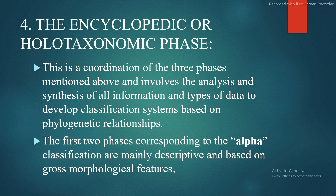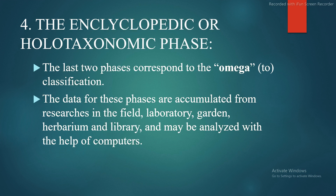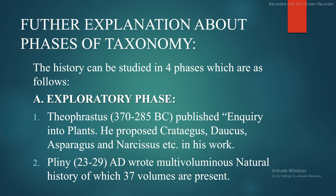Fourth is the encyclopedic or holotaxonomic phase. This is the coordination of the three previous phases and involves the analysis and synthesis of all information and types of data to develop classification systems based on phylogenetic relationships. The first two phases correspond to alpha classification and are mainly descriptive, based on gross morphological features. The last two phases correspond to omega classification, with data accumulated from field, laboratory, garden, herbarium, and library, which may be analyzed with the help of computers.